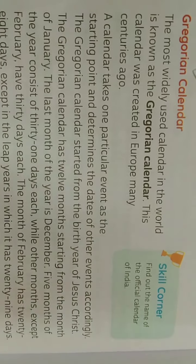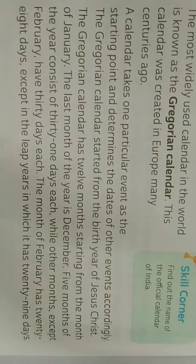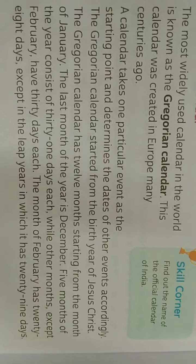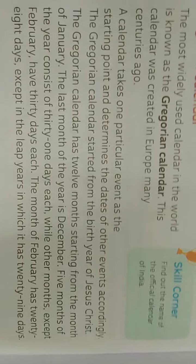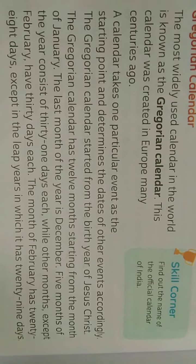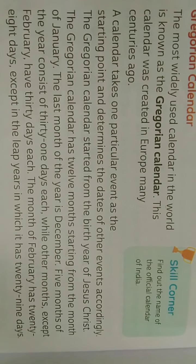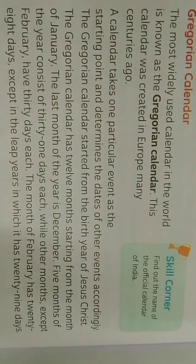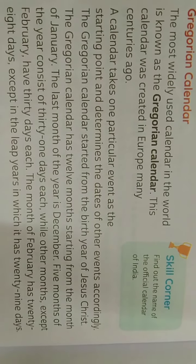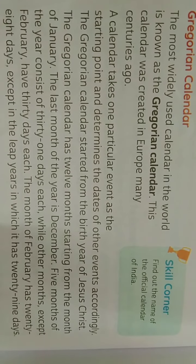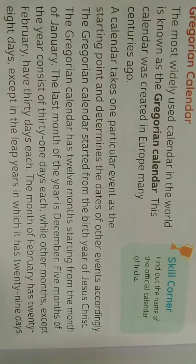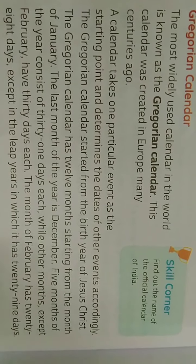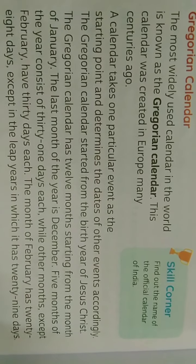The Gregorian calendar has 12 months, starting from the month of January. The starting month is January and the last month is December.